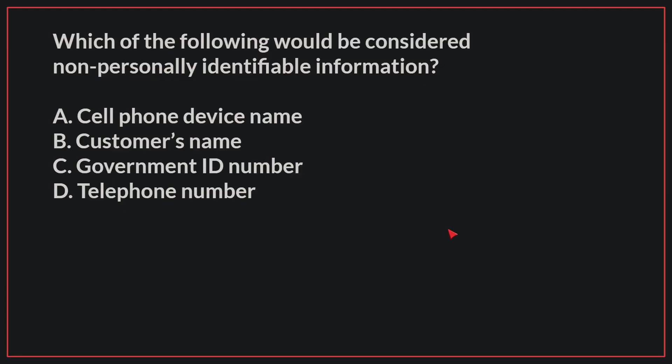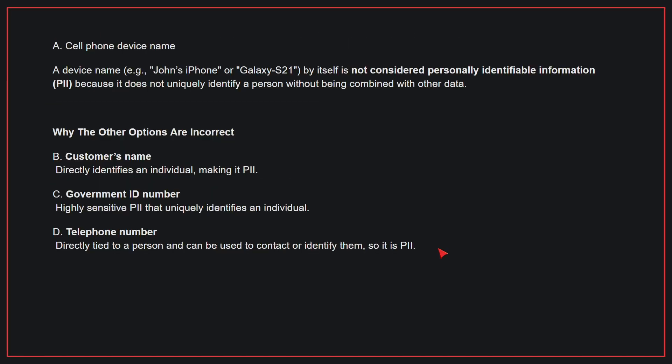Which of the following would be considered non-personally identifiable information? The correct answer is A: Cellphone device name. A device name by itself is not considered personally identifiable information, because it does not uniquely identify a person without being combined with other data.